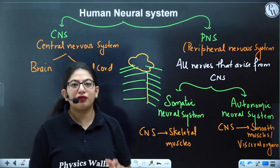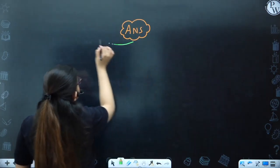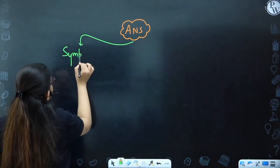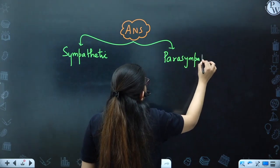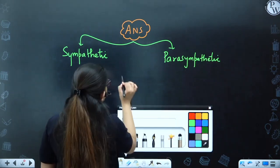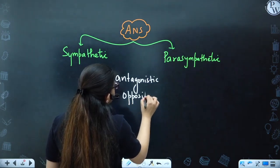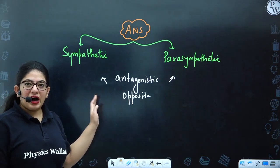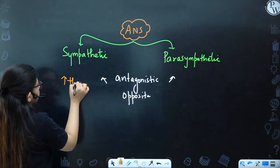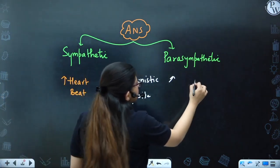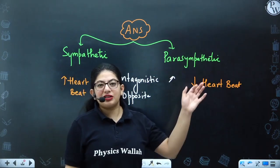The Autonomic Nervous System is further of two types: one is Sympathetic and another is Parasympathetic. Both work opposite to each other — they are antagonistic. For example, if sympathetic is increasing your heartbeat, parasympathetic will decrease your heartbeat. The detail of the autonomic nervous system will be covered in a later section of this chapter.